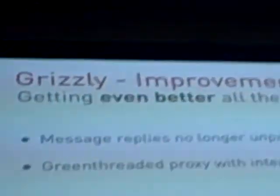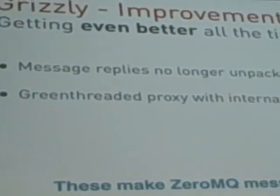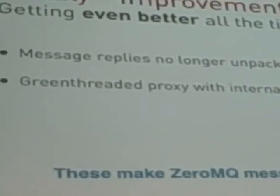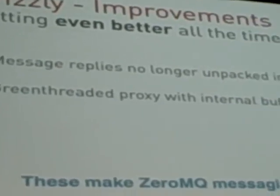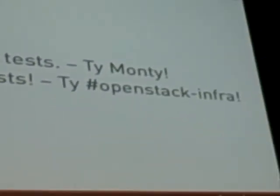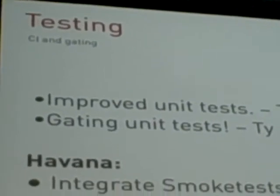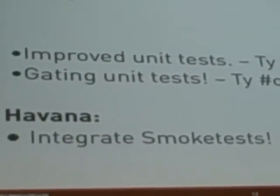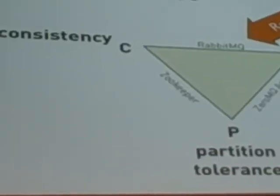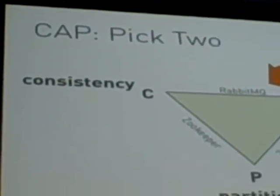We made things even faster: we are no longer doing double deserialization and unpacking things on the proxy — that receiver process. That process also now does internal buffering and queuing, which makes throughput better because it's not blocking. We finally have unit tests that are gating, so you can't break the code and push it into the project — because that was really bad before. And we're going to do smoke tests so we can test integration with Nova and all these other projects.